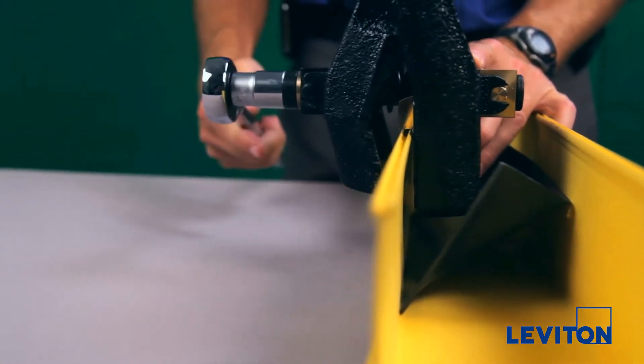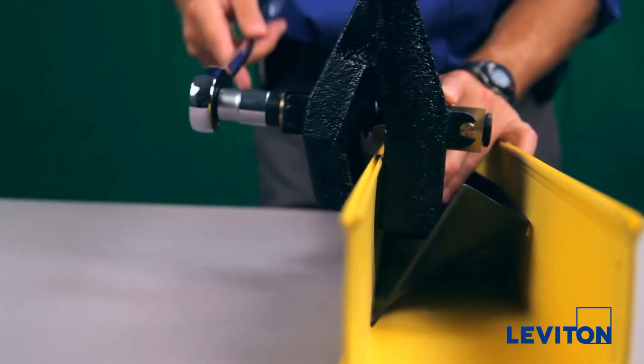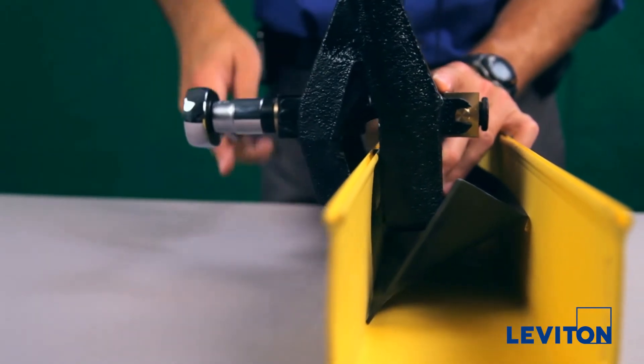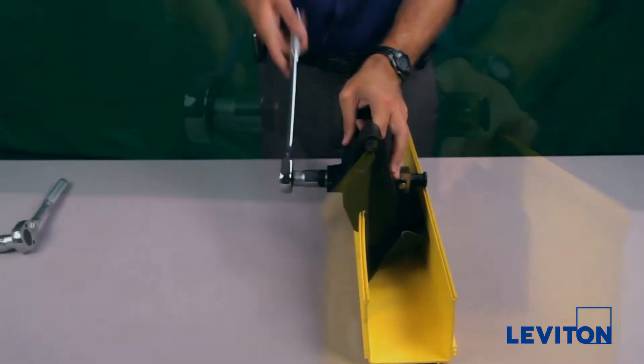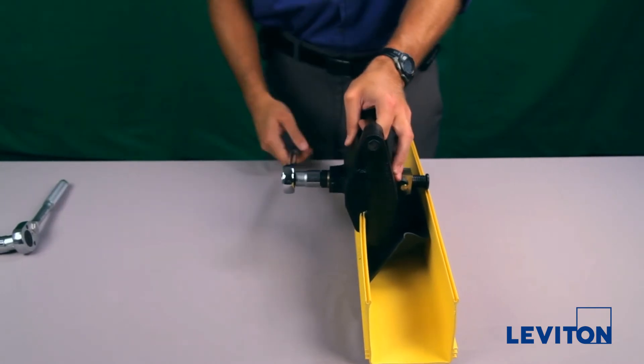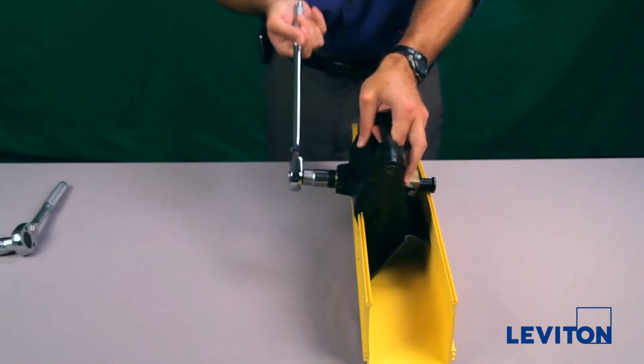Go ahead and tighten down the tool onto the ducting. Pulling it through the ducting, it's going to make a cut.